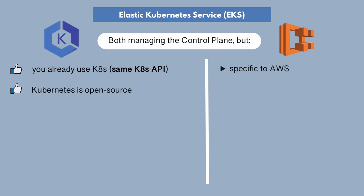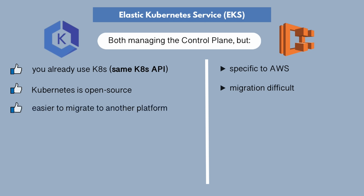Another reason: if you're deciding between ECS and EKS, ECS is specific to AWS. So if you decide to migrate to another platform later, you won't be able to move that cluster because it is tightly integrated with AWS. With EKS, because it's managing a Kubernetes cluster, you can easily migrate because Kubernetes is not specific to AWS — it's an independent tool you can use anywhere. You can migrate to another platform or even on-premise, using the same configuration and tools across multiple platforms. That's a major advantage of EKS versus ECS.